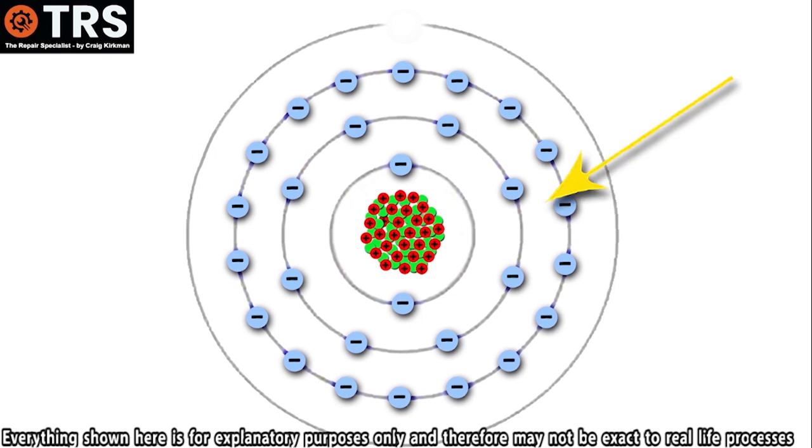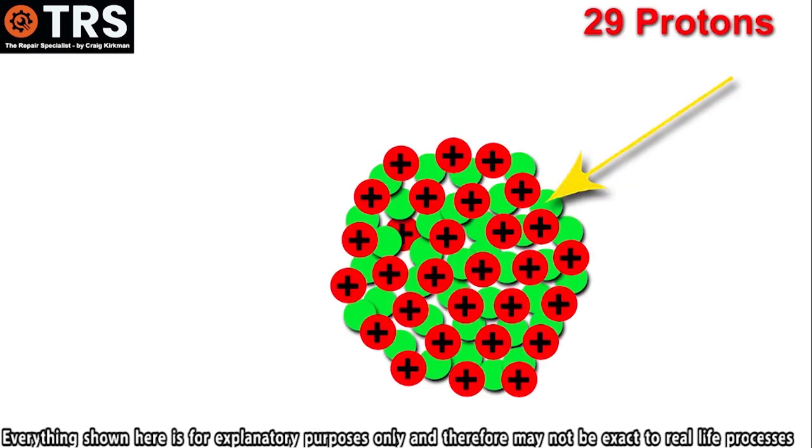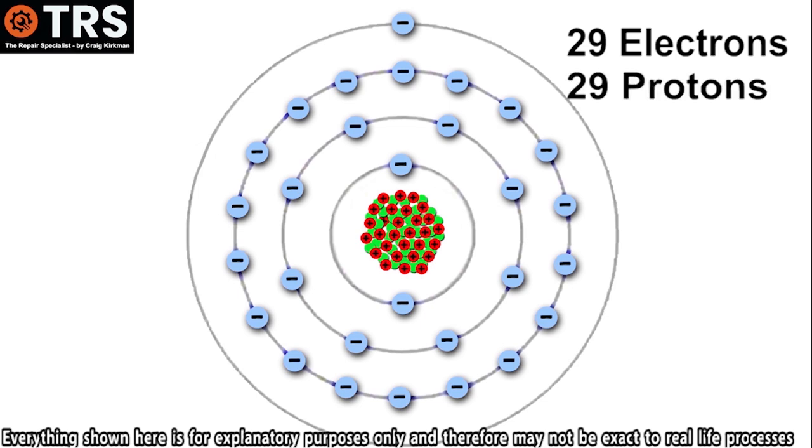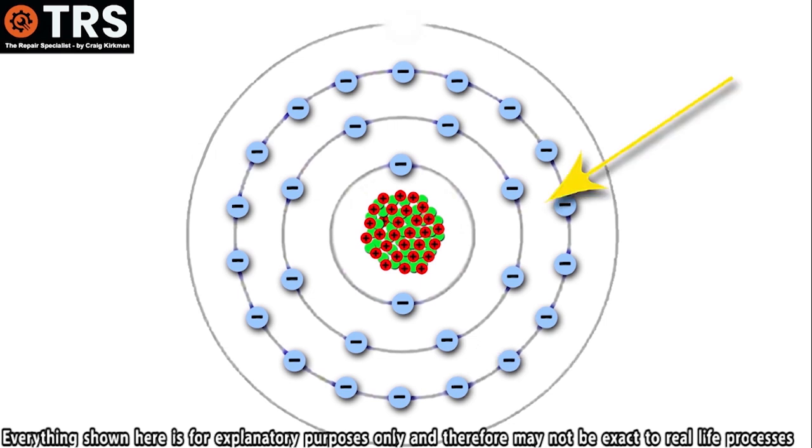It's changed because when all the electrons were present - 29 of them - bearing in mind that all 29 electrons have a negative charge for the copper atom, this matched the 29 positively charged protons within its nucleus. So with all the 29 negatively charged electrons and the 29 positively charged protons, this means that the overall charge of this atom is neutral, because both charges, although being opposite, are equal in strength.